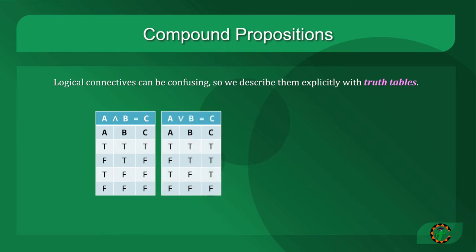The disjunction A or B is true if either or both of the propositions are true. If A and B are true, C is true. If A is false and B is true, C is true. If A is true and B is false, C is true. And only if A and B are both false is C false.